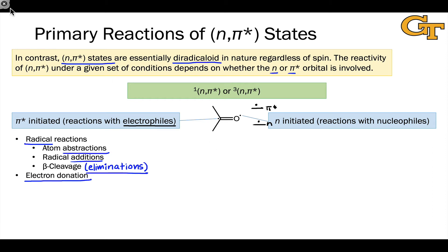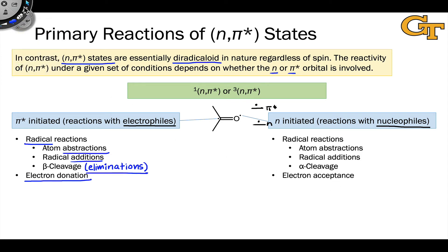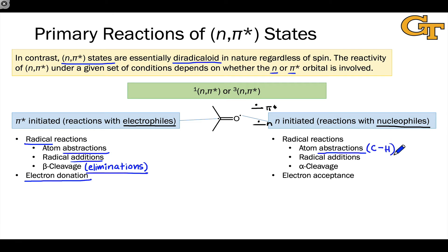On the other side, n-initiated reactions involve the n orbital, which is electrophilic — it has a low-energy hole — and so it will tend to react with nucleophiles. Radical reactions are still possible but qualitatively different: in atom abstraction, we're thinking about abstracting a nucleophilic atom such as H from a C–H bond, rather than an electrophilic atom. Atom abstractions of C–H bonds by the n orbital are an important and very common process for carbonyls in both their singlet and triplet states.